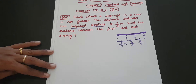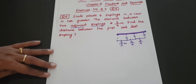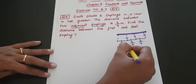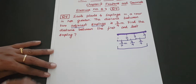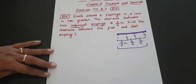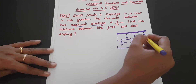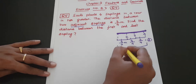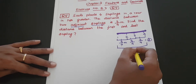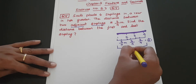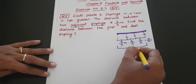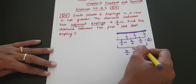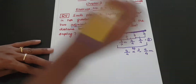Question number 5: find the distance between the first and last sapling. From the 1st plant to the 4th plant, there are 3 gaps of 3/4 meter each. So we multiply 3/4 three times: 3/4 × 3. Three threes are 9, so the answer is 9/4 meter.